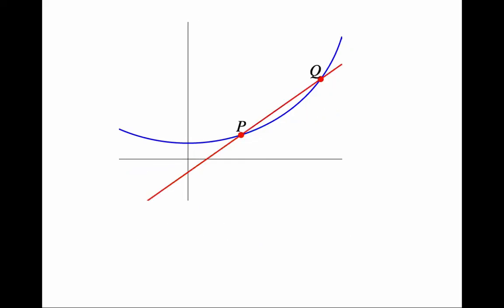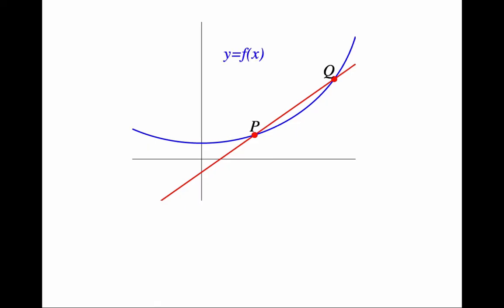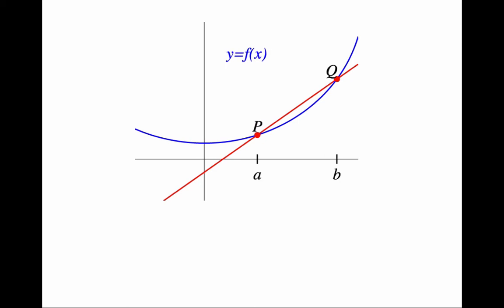Let me look back at the generic red line. Let's assume the blue curve is the graph of a function f. Let's call a and b the x-coordinates of the points P and Q, respectively. We know their y-coordinates, because P and Q are on the graph of f. Then, the slope of the red line, the line going through P and Q, is f of b minus f of a over b minus a.